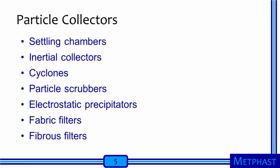Particle collectors that use a variety of operating principles are available. They include settling chambers, inertial collectors, cyclones, particle scrubbers, electrostatic precipitators, fabric filters, and fibrous filters. While we will talk at least briefly about all of these approaches, we will focus most on fibrous filters.